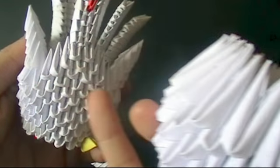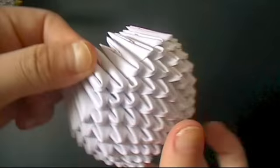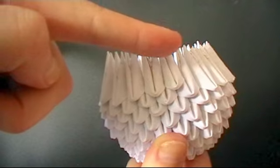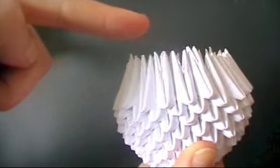Now to make the chest, make a row of five pieces. Then you're going to put a row of four on top. Then three, then two.